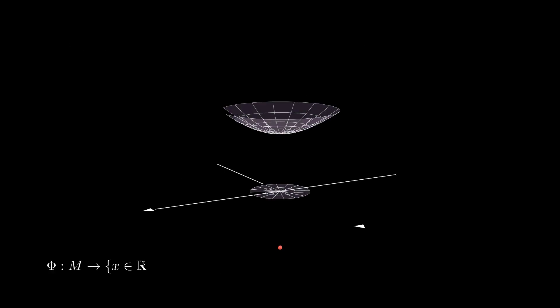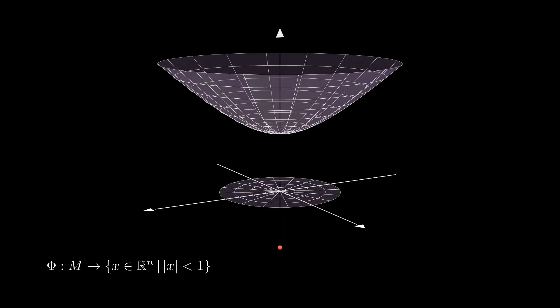Now I will ask you to check that the hyperboloid model is isometric to the ball model. This is achieved by an isometry we call uppercase Phi. It is constructed just like the stereographic projection. For any point x in the hyperboloid, we take the line that passes through x and the point